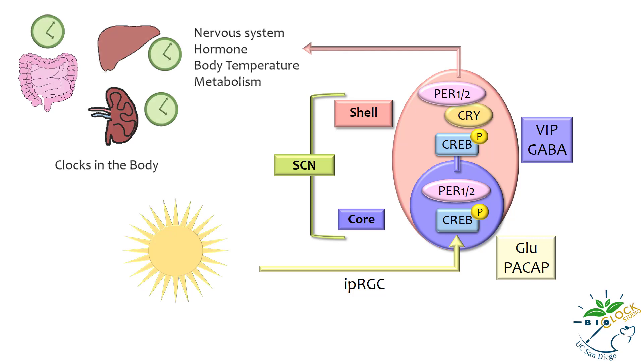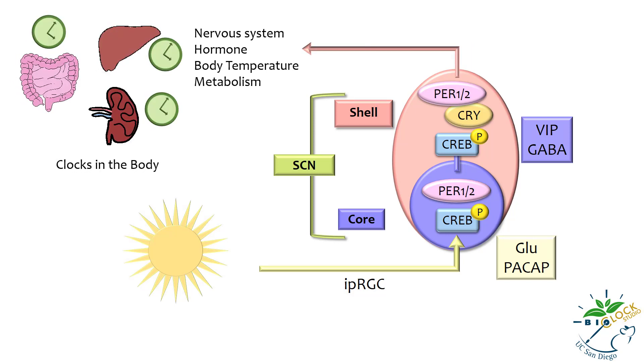The SCN in turn entrains clocks of the rest of the body through many processes including autonomic nervous system, hormone release, body temperature, and metabolism.